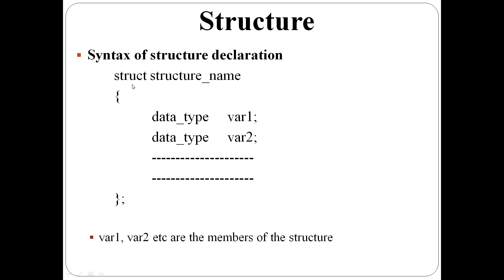The syntax is struct, structure name within curly brackets, variable declarations. Here, var1, var2 are the members of the structure. Data type followed by variable name. More than one variable of the same data type can be declared together. Curly bracket, close it, semicolon is compulsory.